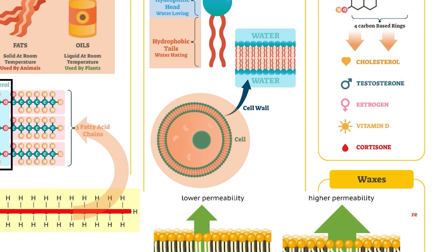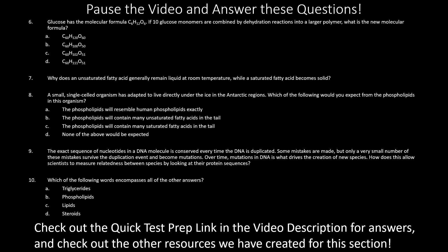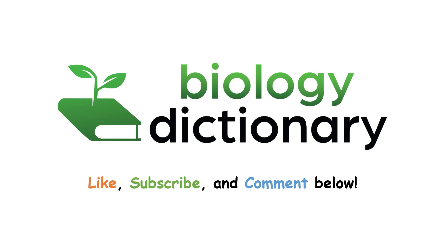We will take a much closer look at phospholipids in section 2.4 when we focus on the plasma membrane. Pause the video and answer this second set of questions to check your understanding of proteins, carbohydrates, and lipid structures. Follow the link in the description to the Quick Test Prep for this section to find all the answers. Thanks for watching — if you enjoyed this video, please like, leave comments or questions about biological macromolecules, and subscribe to the Biology Dictionary channel to find all of our AP Biology videos and resources. Good luck!